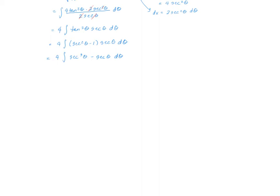I don't know what secant cubed is, but I do know what the integral of secant is. So what we could do is use the reduction formula on just this first part. Why don't I split this up: this is four times the integral of secant cubed theta d theta minus four times the integral of secant of theta d theta.